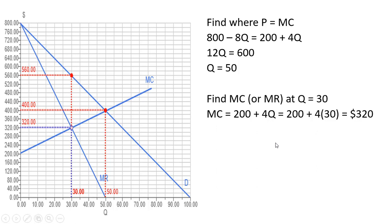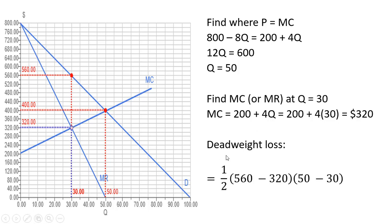Now we have all the dimensions for our triangle. The deadweight loss triangle has a height of 560 minus 320, and a base of 50 minus 30. Doing the math, our deadweight loss is $2,400. I hope you found this video helpful.